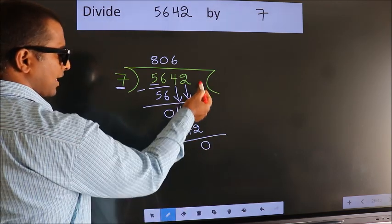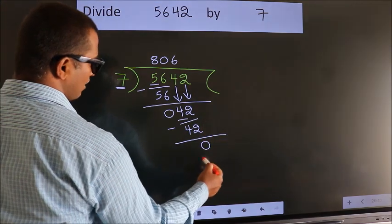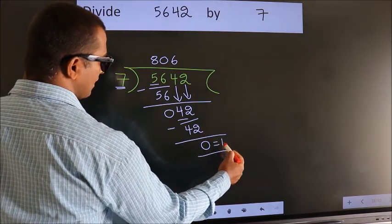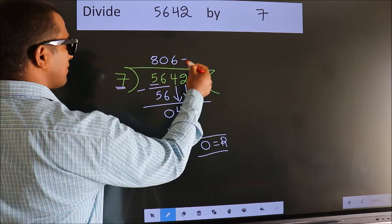No more numbers to bring it down. So we stop here. This is our remainder. This is our quotient.